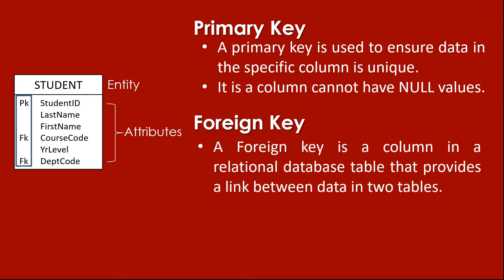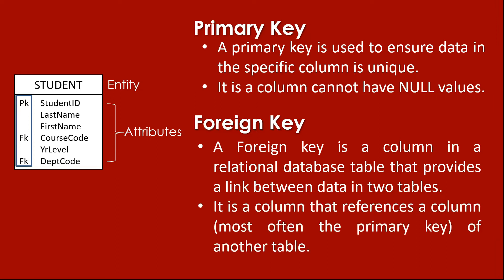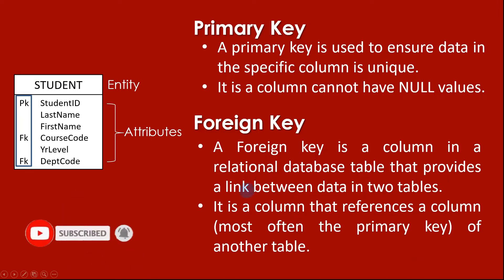Now what is a foreign key? A foreign key is a column in a relational database table that provides a link between data in two tables. It is a column that references a column - most often the primary key - of another table. In our example, the foreign keys are the course code and the department code. A foreign key is an attribute that gives a relationship with another entity, and it is used as a primary key in those other entities.